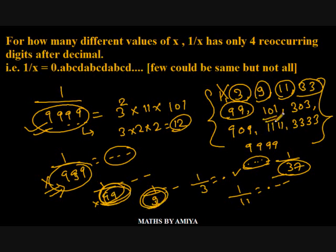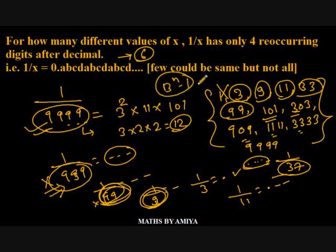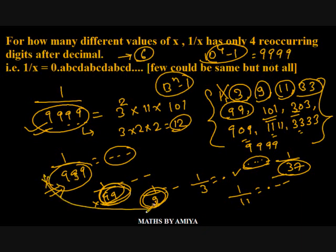So we are only left with 6 values, and the answer is 6. These 6 are the factors of 9999 that are not factors of 999 or 9. For reoccurring decimals, you always work on base raised to power n minus 1. Here in the decimal system the base is 10, and we are looking for 4-digit reoccurring, so 10 raised to power 4 minus 1, which is 9999, but we should not include the lesser values. I hope it is clear — the answer is 6.